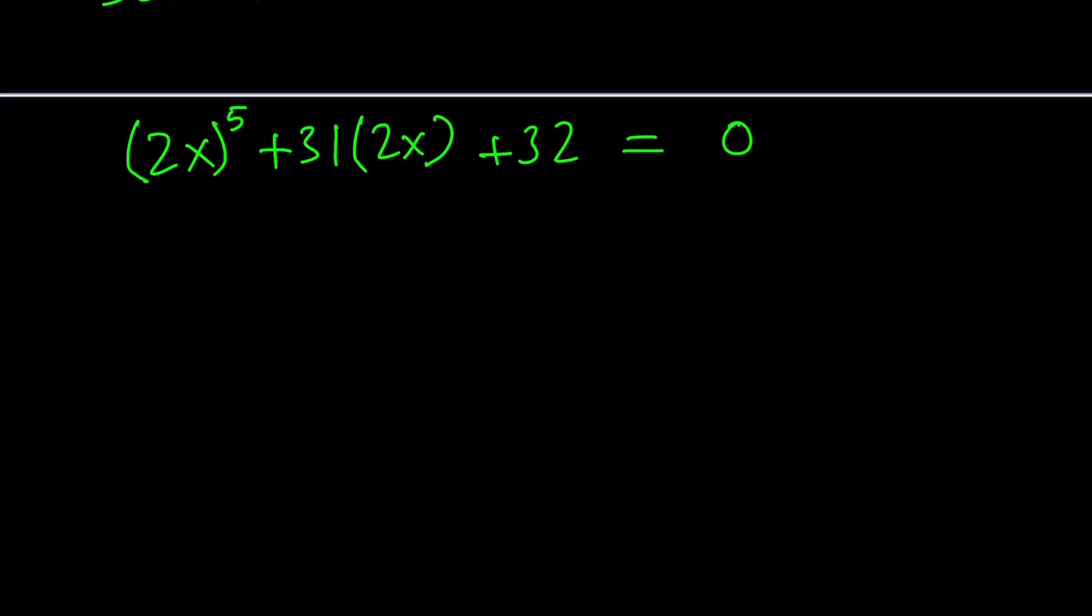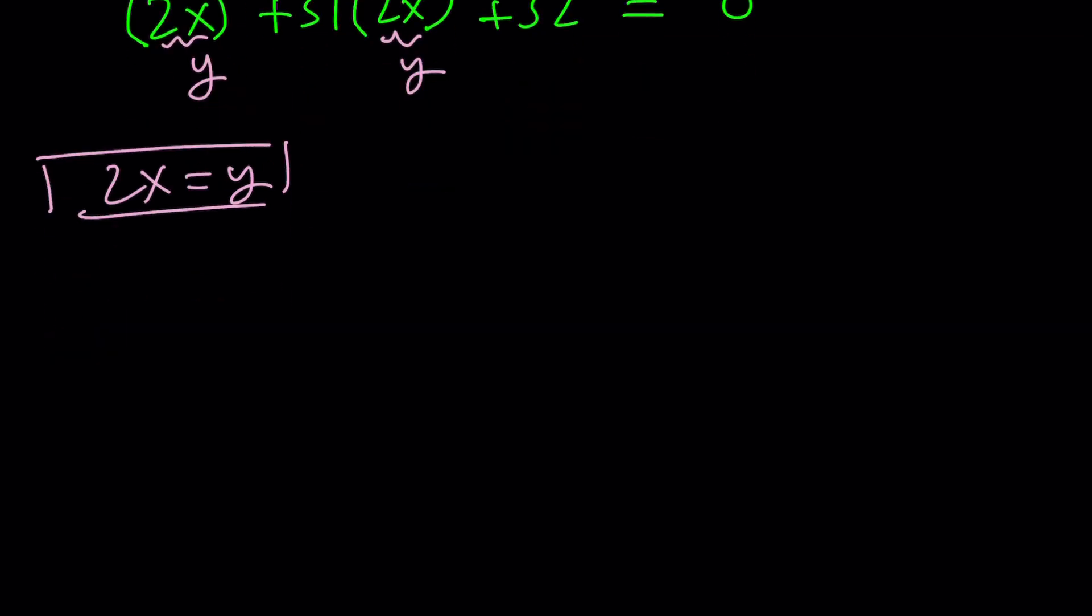Notice that hopefully it's obvious we should substitute, change variables. How about calling this y? So now we have 2x equals y. This gives us y to the fifth power plus 31y plus 32 equals 0.